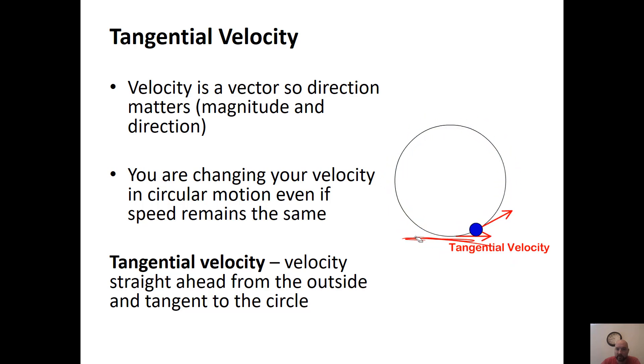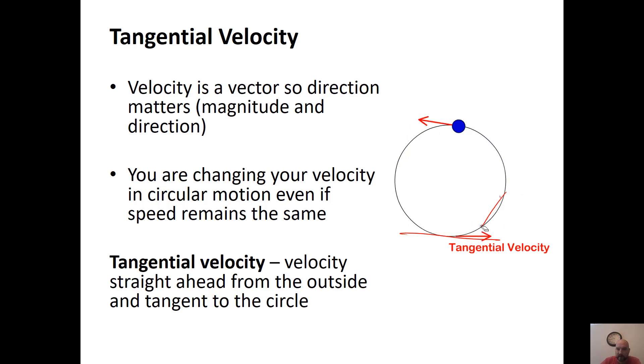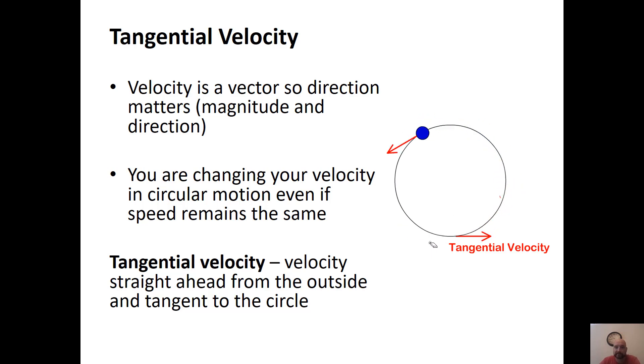Tangent is just a line. If you line it up against the circle anywhere, that's going to be tangent to the circle — going straight ahead tangent.